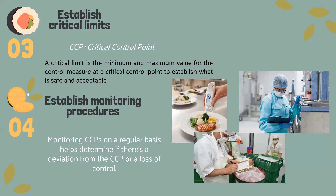Principle number four: establish monitoring procedures. Monitoring CCPs on a regular basis helps determine if there is a deviation from the CCP or a loss of control. In monitoring CCPs, it is important to determine: one, what should be monitored — such as food product temperature, weight, or pH level; two, how it should be measured and what tools to use; three, how frequently monitoring should occur; and four, who is the responsible person to perform this monitoring.